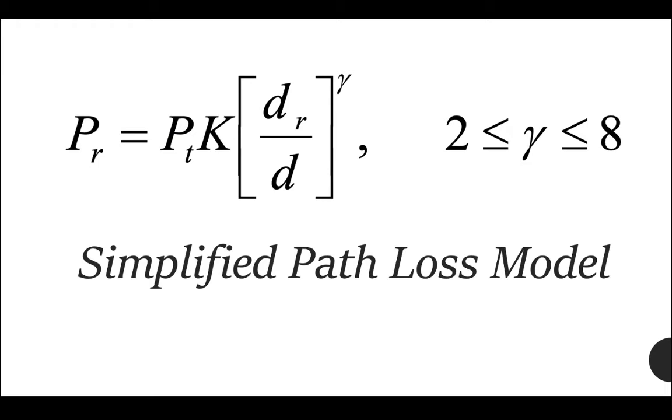The next model is simplified path loss model. This equation is used when path loss is dominated by reflection. We can use this equation to create a signal model propagation. The most important parameter is the path loss exponent gamma, determined empirically between 2 and 8.